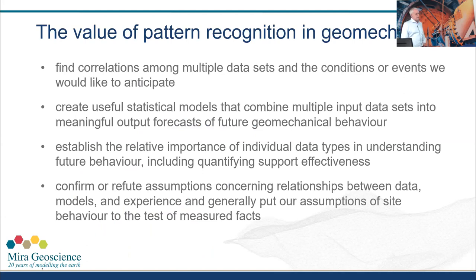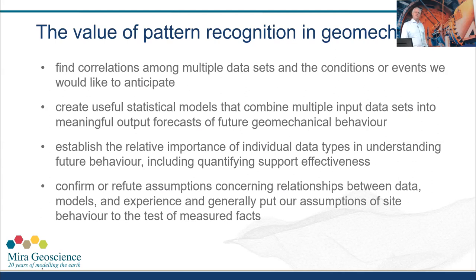There's a lot of value to this kind of pattern recognition, even though it isn't intelligence itself. It finds correlations amongst data sets and hazard conditions. It creates useful statistical models combining these data sets quantitatively. It establishes the relative importance of individual input data types quantitatively, and it can really serve to confirm or refute assumptions concerning the relationships. We've found this most useful — we'll do these analyses, go back to site and discuss it, and often hear: 'we knew that, we knew that, but we didn't know that.'